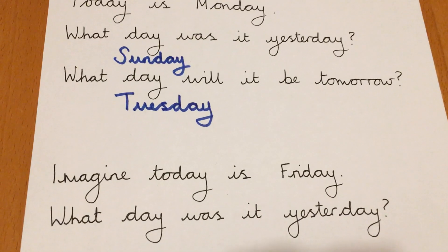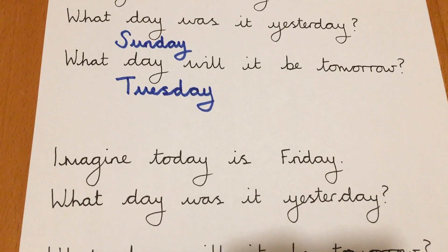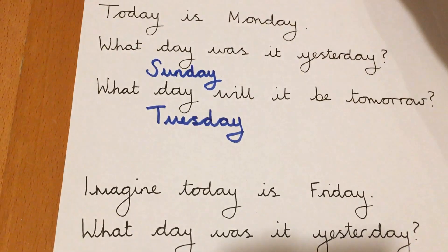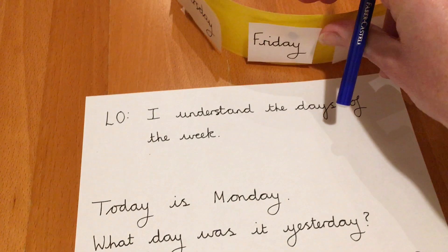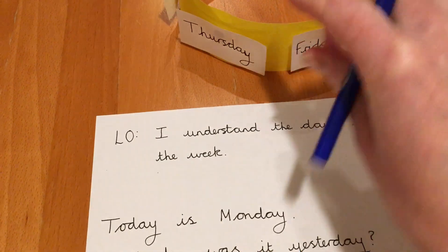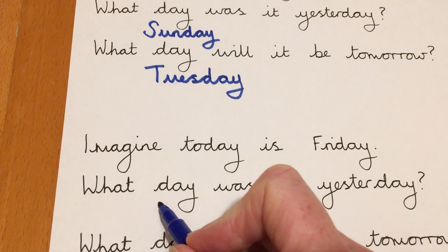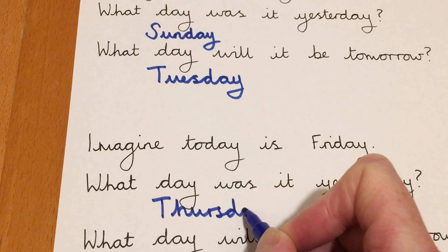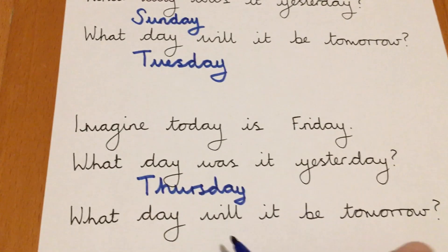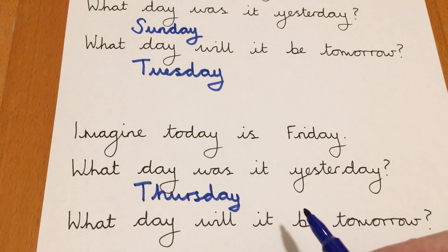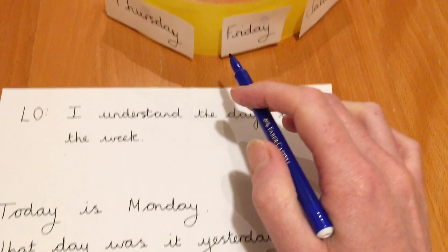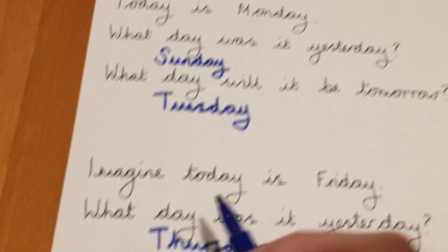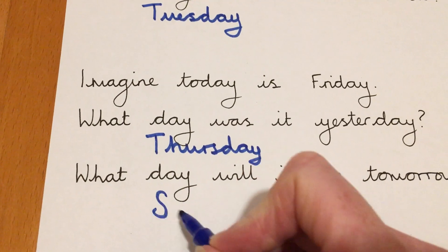Imagine today is Friday. What day was it yesterday? The day before Friday is Thursday, isn't it? So yesterday, if today was Friday, it would have been Thursday. What day will it be tomorrow if it is Friday? The day after Friday is Saturday, isn't it? Saturday.